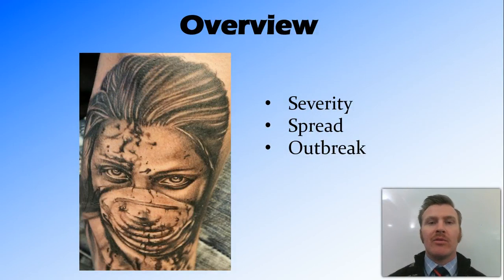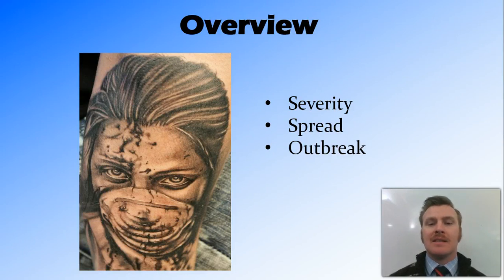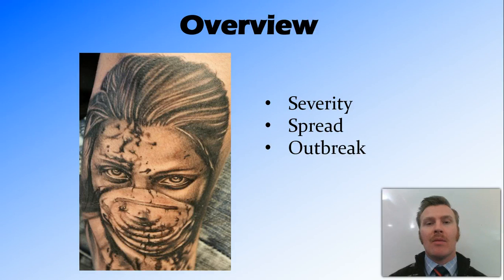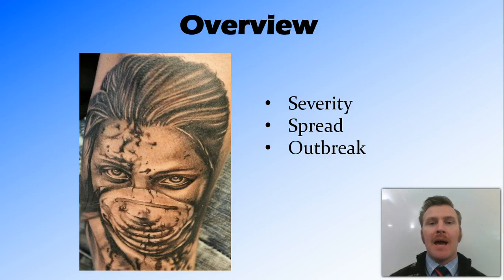In this video on epidemiology, we've looked at assessing the severity of a disease through infectiveness and virulence. We've looked at how diseases can spread either directly from person to person, or indirectly through some sort of intermediary or vector. And we've looked at how to classify an outbreak — from endemic, something that occurs to a small number of people each year, through epidemic, outbreak, and pandemic affecting people on a global scale.